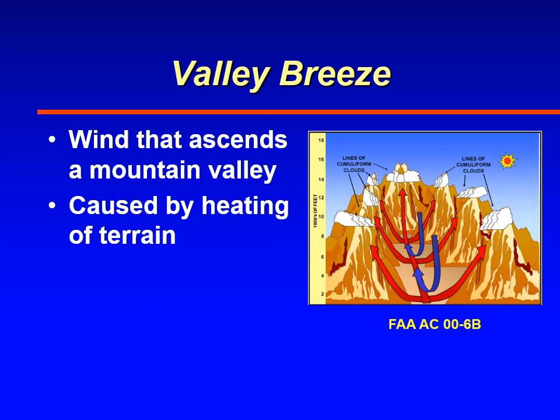Finally, valley breezes are winds that ascend a mountain valley as a result of the heating of the mountains. As the mountains heat up, the air in contact with them heats up, becomes less dense, and starts rising — and that can cause a shear in valleys. That concludes this video on non-convective low-level wind shear. Check the YouTube channel for more videos on non-convective wind shear dealing with flight planning and the physics of wind shear.